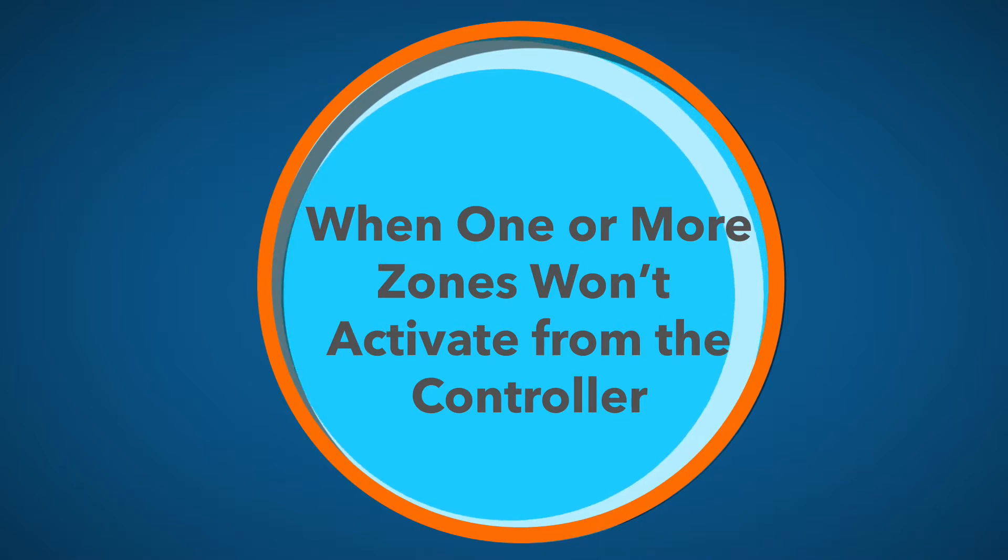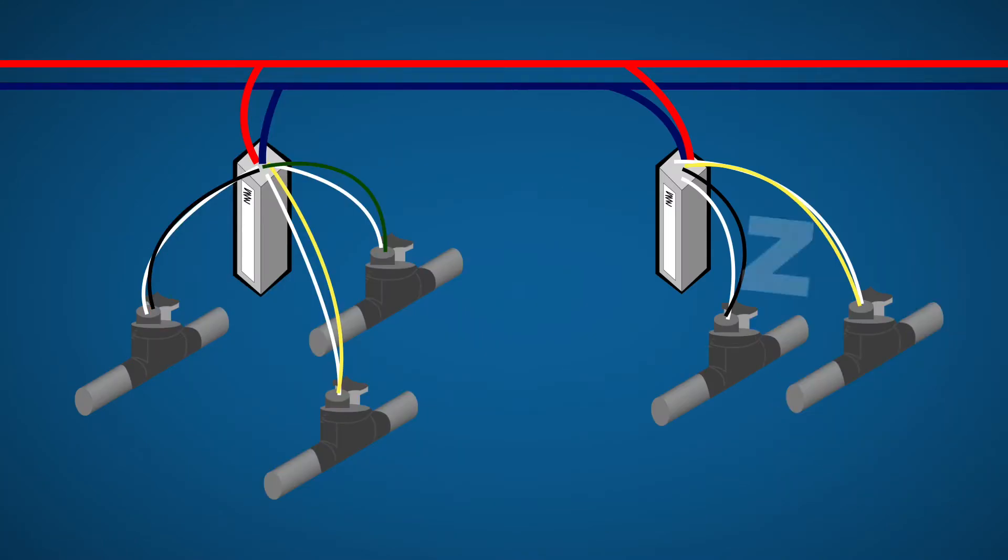Let's examine how to find what's wrong when a specific valve or group of valves will not activate. If you have a whole group of valves that don't come on, you know the fault will exist between the last working decoder and the first one that does not work.